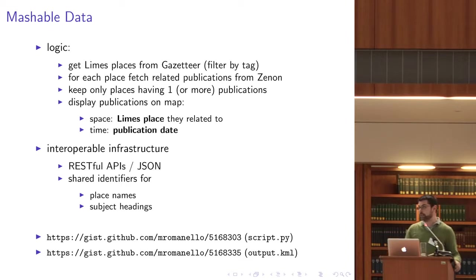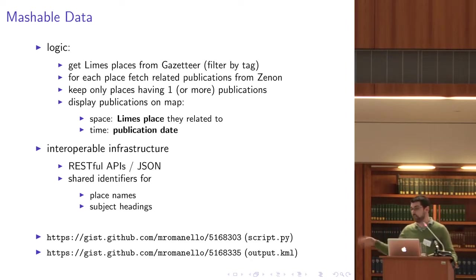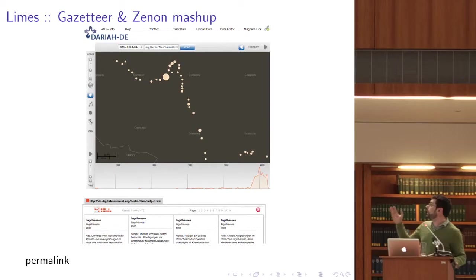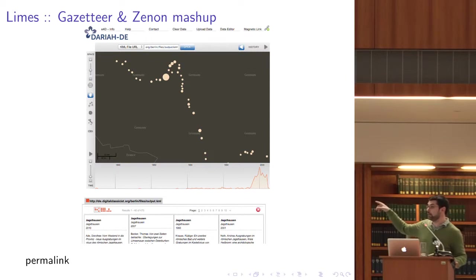Dealing with the data in the gazetteer and Zenon was relatively easy, because the data are very well connected to each other in these two data sources. Getting data from other sources might be slightly more complicated, but all the places in the gazetteer have links to Pleiades, so it would also be possible to get data from Pelagios and increase the data set. The scripts and output are linked in the slides. What I was able to show was the bigger dots representing the places in the Limes with more publications, and in the timeline underneath the map you can see how the number of publications increased or decreased.